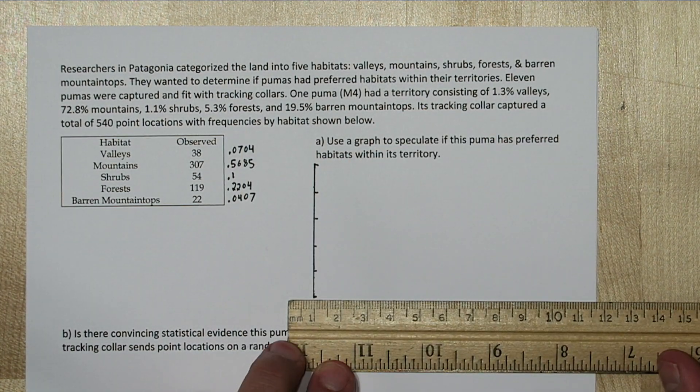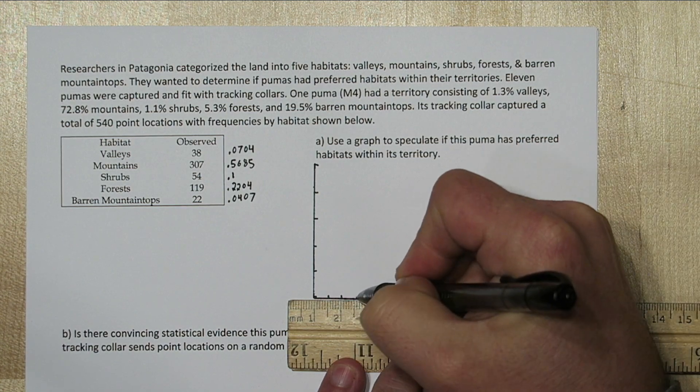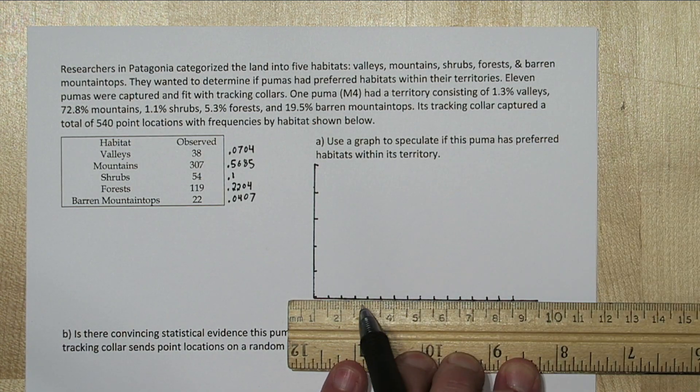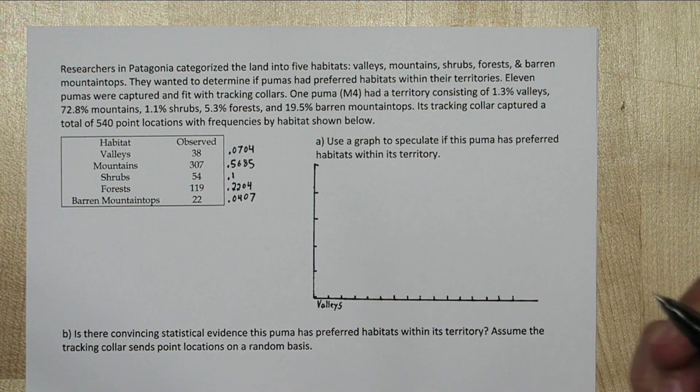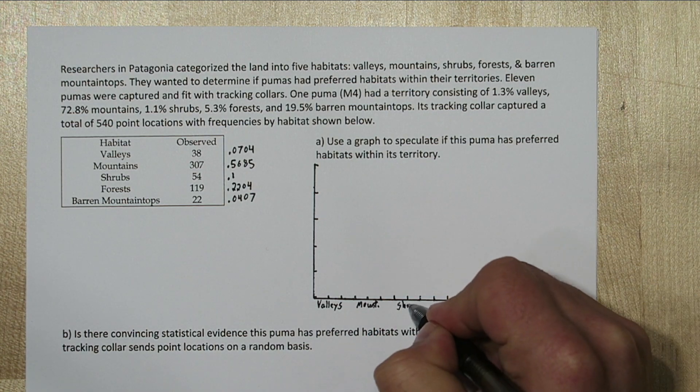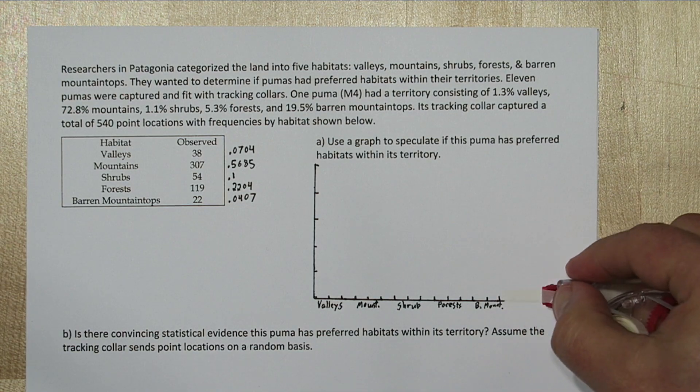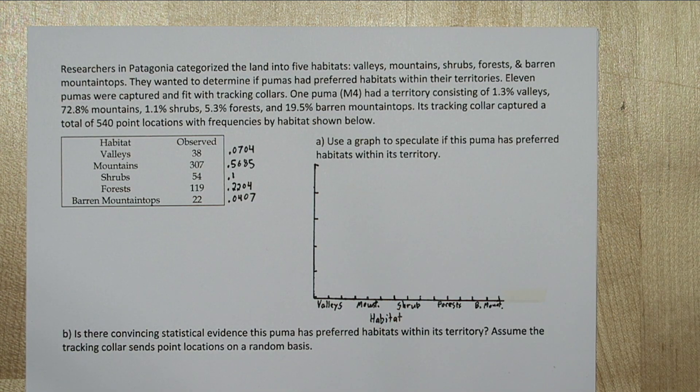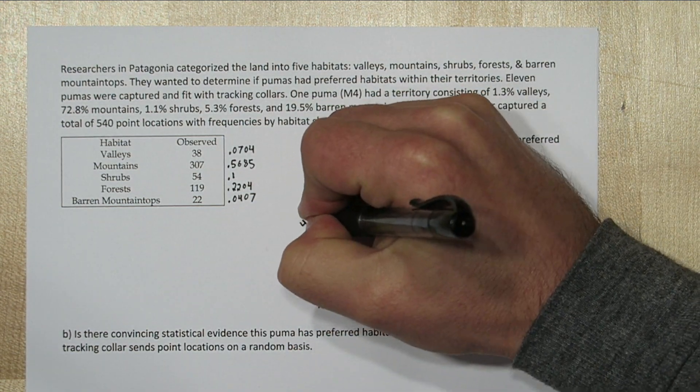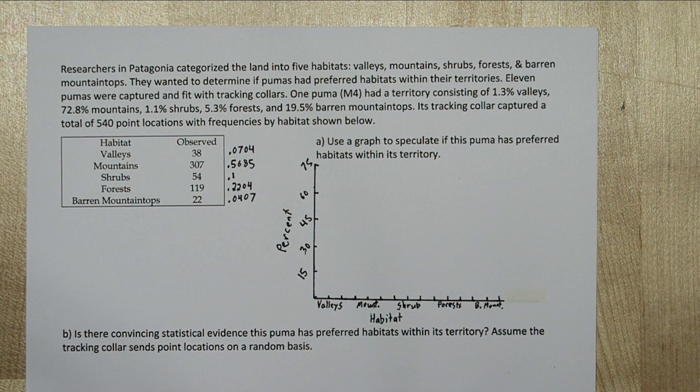So we're going to make a side-by-side bar graph for this comparison. For our horizontal axis, we'll do habitat, and we'll write each of the five habitats there. For our vertical axis, our highest expected percent was 72.8, and nothing in our observed percentages was higher than that, so we'll go up to 75%.